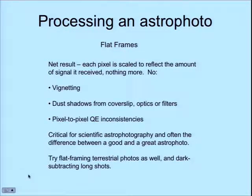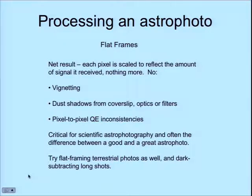You can also do flat framing on terrestrial photos. The flat frame divides through to make the field flat — dark areas are boosted, shadows from dust on the cover glass are corrected by multiplying by the inverse of the shadow. Pixel-to-pixel QE inconsistencies are taken care of. You guys have all probably seen that with a very fast optical system, the corners are dark from vignetting — flat framing fixes that.